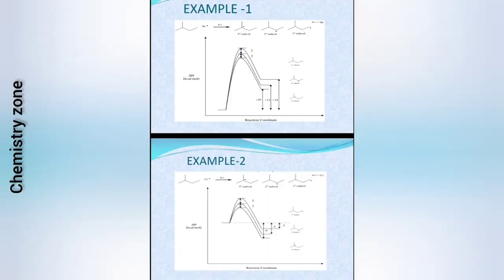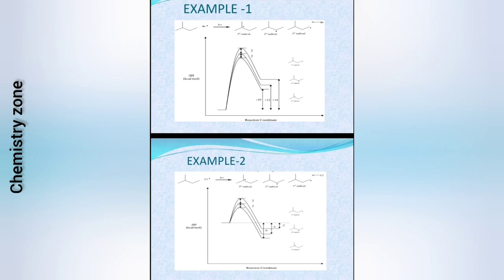Example of Hammond's Postulate including bromination and chlorination: when an alkane reacts with bromine, there are 3° radical, 2° radical, and 1° radical intermediates plus HBr. The reaction coordinate diagram shows first formation of 3°, then 2°, then 1° radical. For chlorination, a very similar formation pattern is seen, but the key difference is that in bromination the transition state resembles the product, while in chlorination the transition state resembles the reactant — this is the Hammond's Postulate distinction.